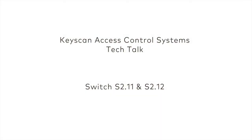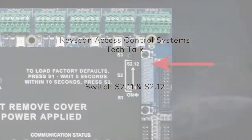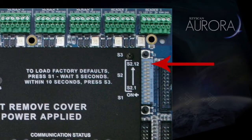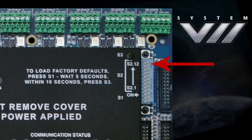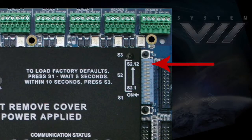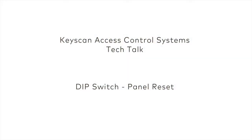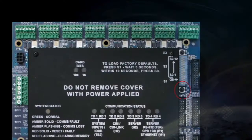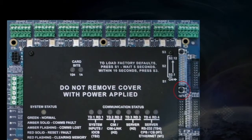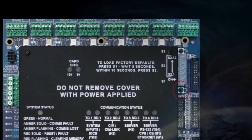Switch 11 and 12 are used for software selection. The default setting is set to Aurora software. If you are installing an access control unit to be used with either System 7 or Vantage software, you must set these switches accordingly. Any time that the DIP switch settings are changed, a reset must be performed so the unit recognizes your new settings.